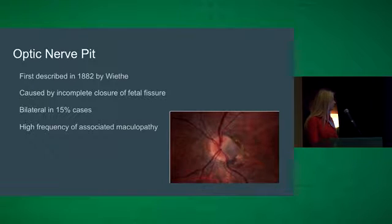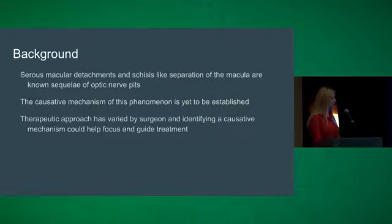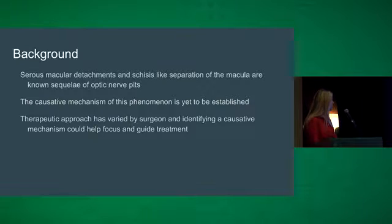About 25 to 75% of patients with optic nerve pits will develop this associated maculopathy. It's been known for a while that serous macular detachments and schesis-like separation of the macula are sequelae of optic nerve pits. However, the causative mechanism of this phenomenon is yet to be established, and therapeutic approach has varied widely by surgeon. We feel that identifying a causative mechanism could help focus and guide treatment.